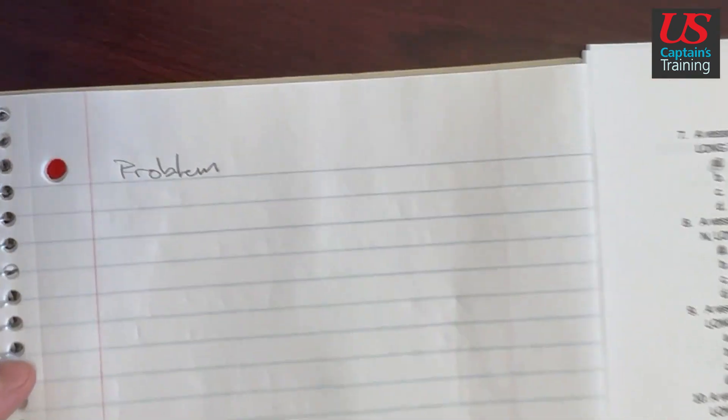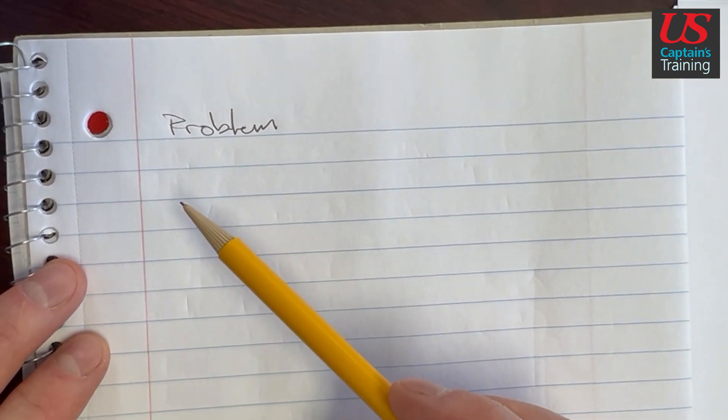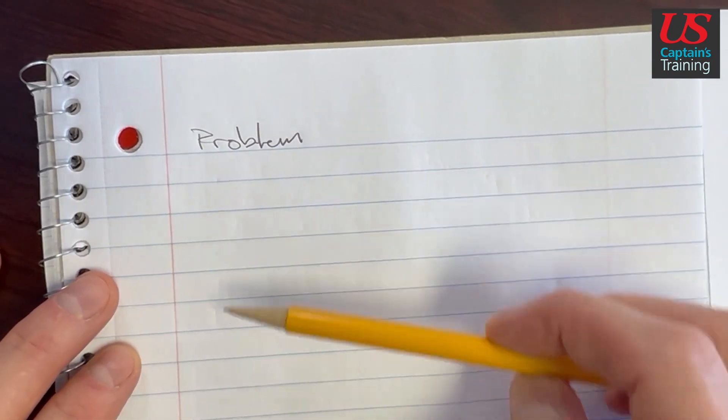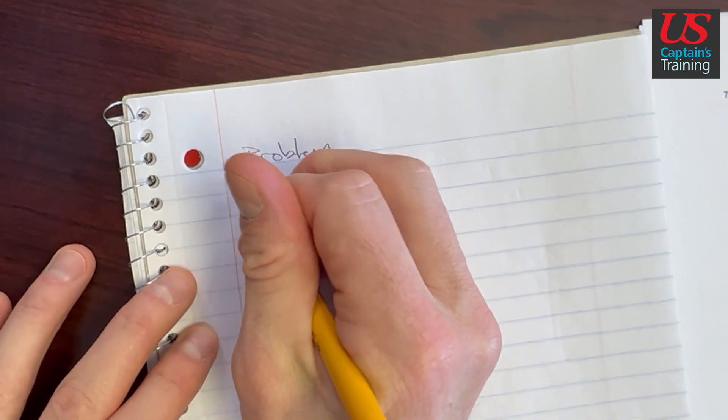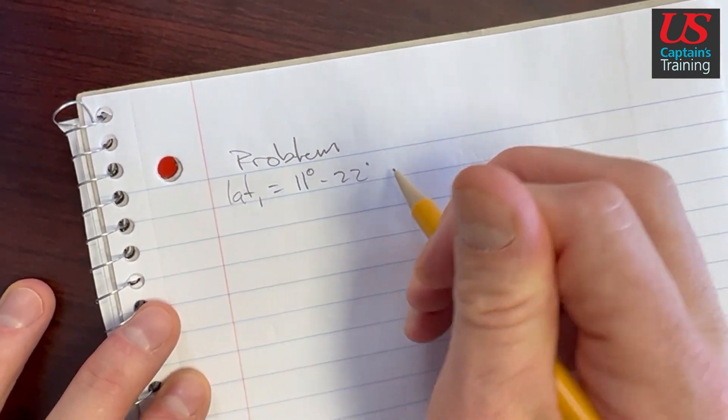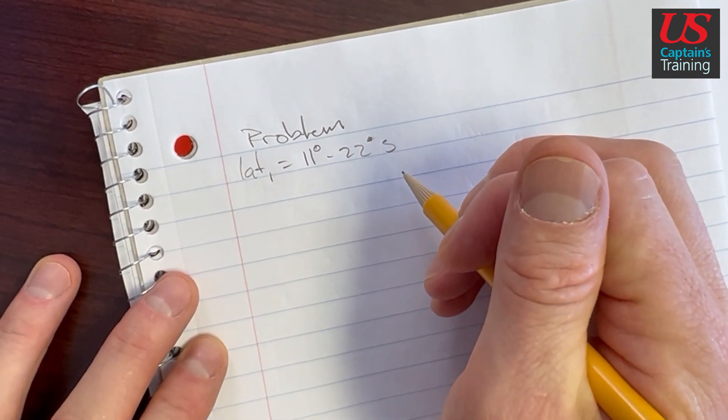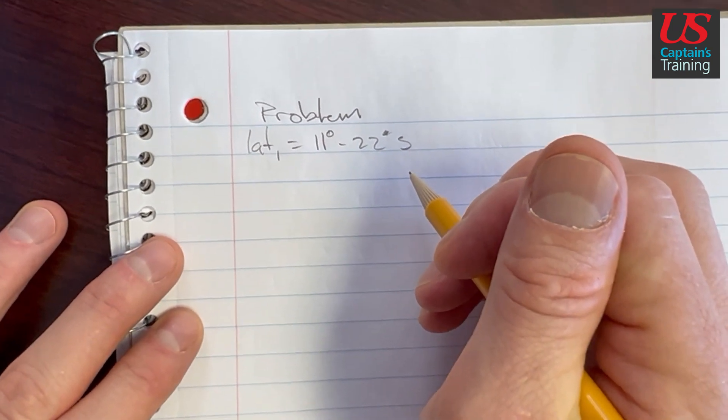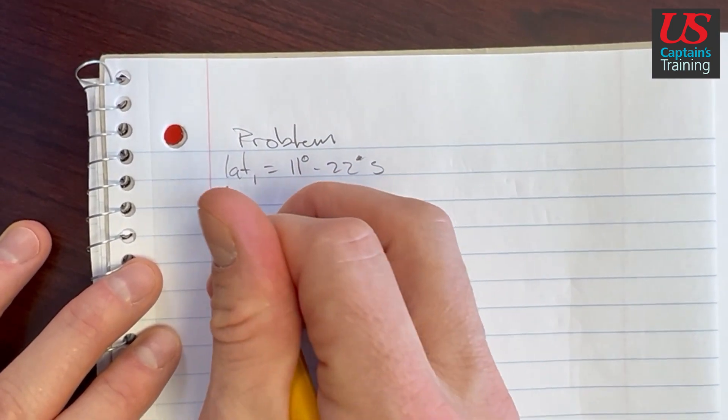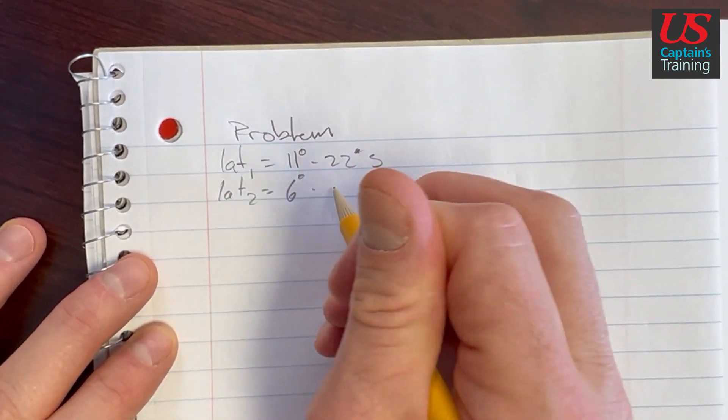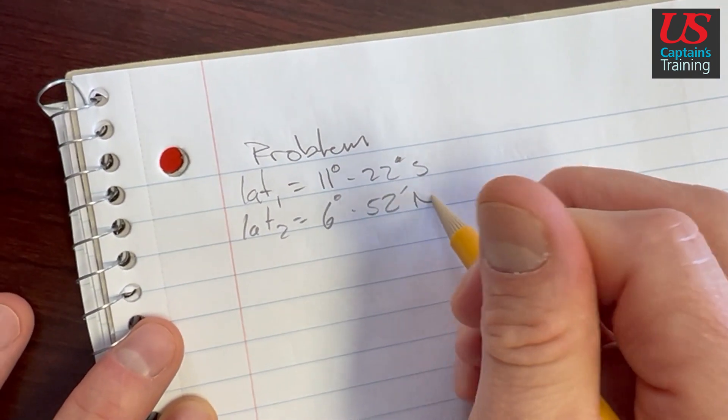So the first thing we're going to do is find little l by calculating the distance between latitude 1 and latitude 2. That shows the north and south direction that we move. So let's find latitude 1. Latitude 1 equals 11 degrees 22 minutes south. Latitude 2 equals 6 degrees 52 minutes north.